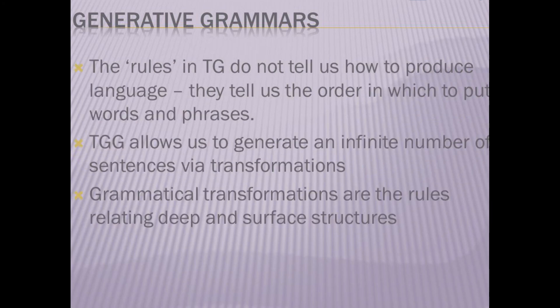The rules in TG do not tell us how to produce language; they tell us the order in which to put words and phrases. TGG allows us to generate an infinite number of sentences via transformations. Grammatical transformations are the rules relating deep and surface structures.